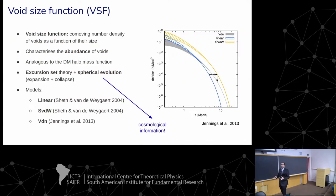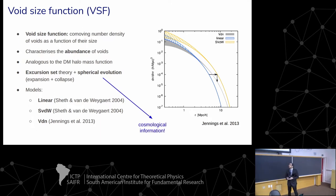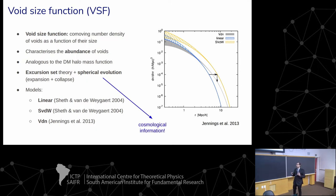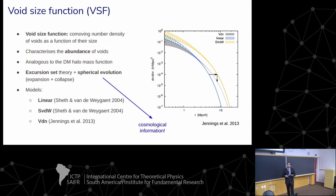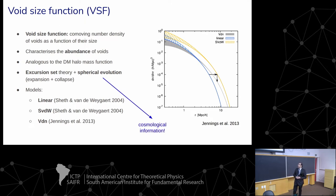Now I am in a position to introduce the first void statistic: the void size function. Mathematically, it quantifies the comoving number density of voids as a function of their size — essentially a histogram of void radii. So physically, the void size function describes the abundance of voids in the universe. It is analogous to the dark matter halo mass function, so it can be modeled in a similar way using excursion set theory combined with the spherical evolution of density perturbations. There are three main approaches for modeling it: the linear model, the Sheth-van de Weygaert model, and the volume conserving model, which differ in how they handle the transition from linear to non-linear regime.